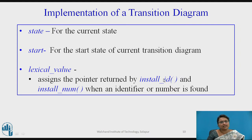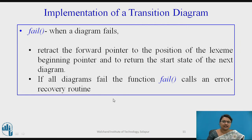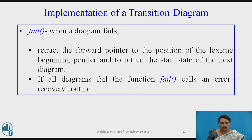One more function implemented for transition diagrams is called 'fail'. This fail function is invoked whenever a transition diagram fails to read a particular pattern. What fail does is: it retracts — coming back to the beginning of the lexeme — and then moves the pointer to the next transition diagram so it can check the same lexeme against the next diagram.